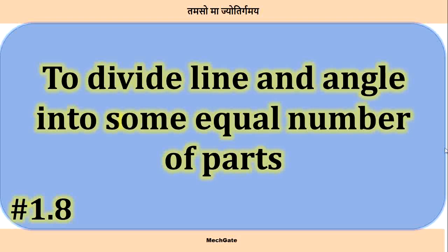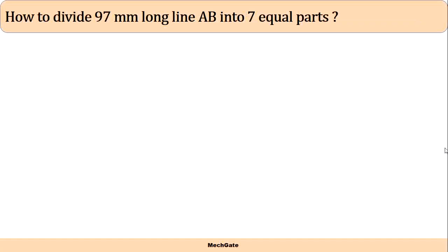The problem statement is: how to divide a 97 millimeter long line AB into seven equal parts. Now we know if we divide 97 by 7 we will get some fractional value. So before starting, let's understand what is least count.